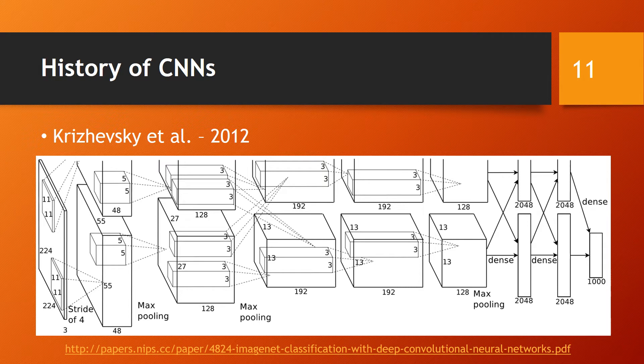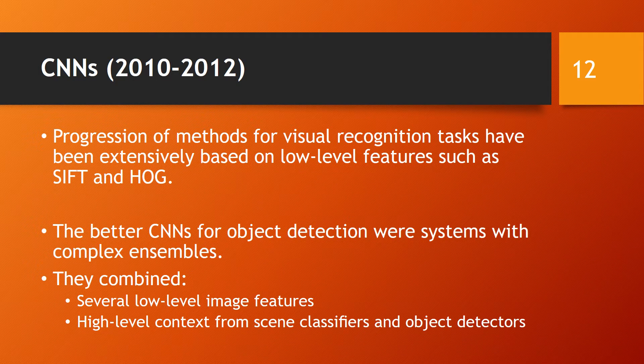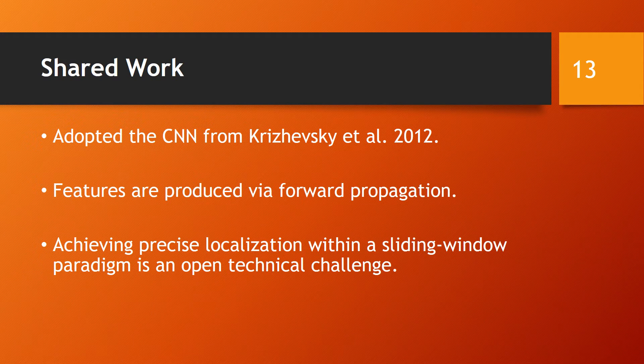In 2012, Krizhevsky et al. presented a large CNN trained incorporating dropout regularization in addition to rectifying non-linearities, which generated considerably higher image classification accuracy. Between 2010 and 2012, most CNN approaches were extensively based on low-level features such as SIFT and HOG. For object detection, the better systems combined several low-level image features with high-level context. With regard to the paper, the authors' approach employs a CNN as described by Krizhevsky et al. in 2012.